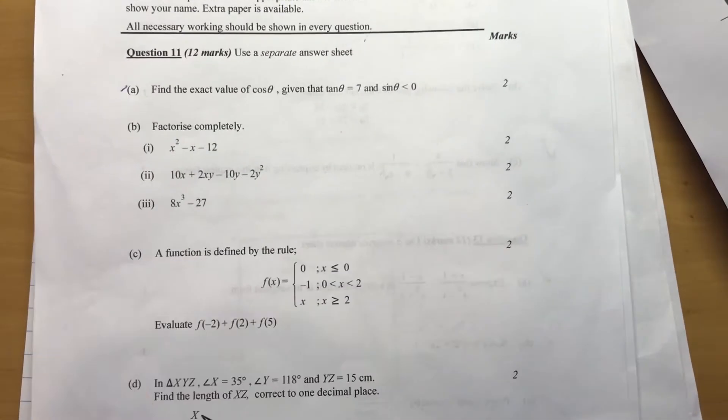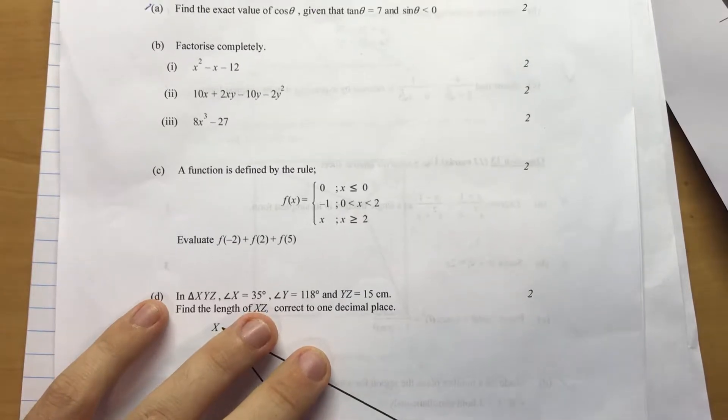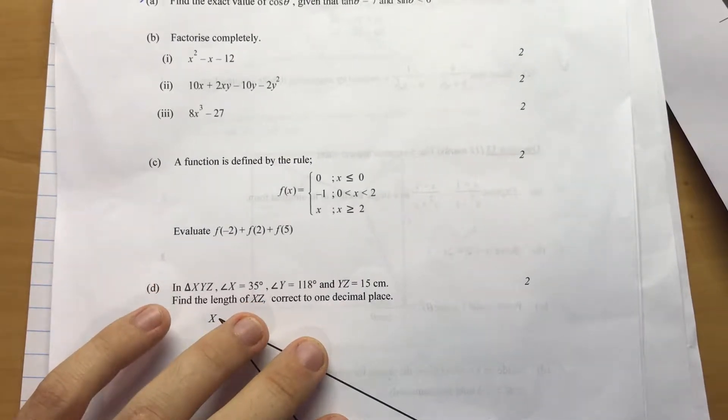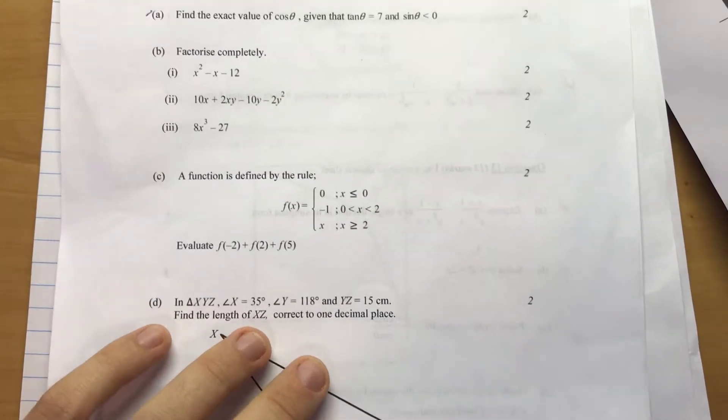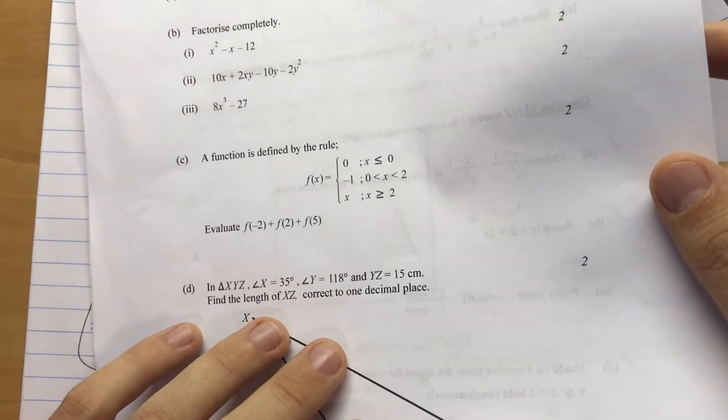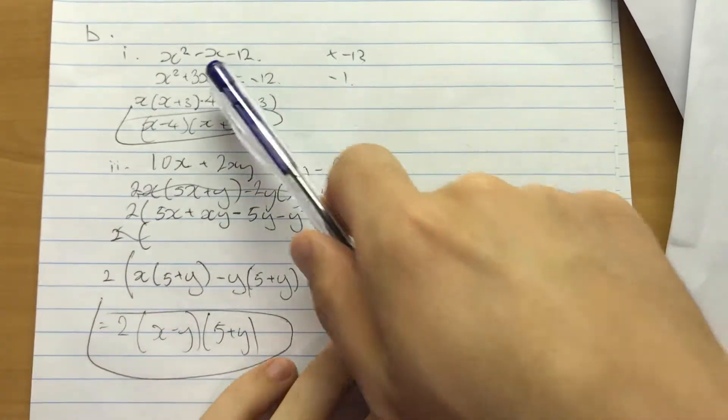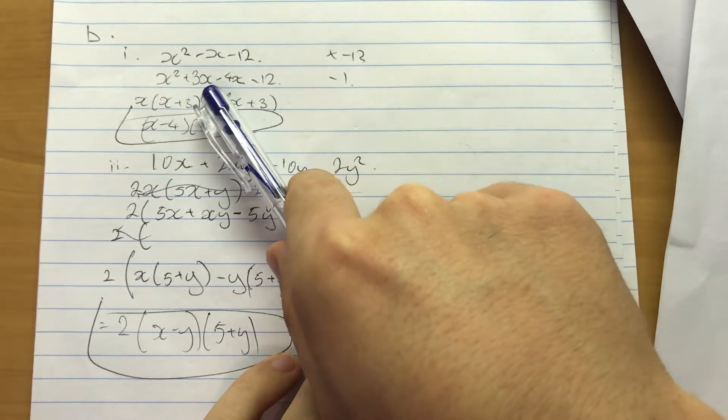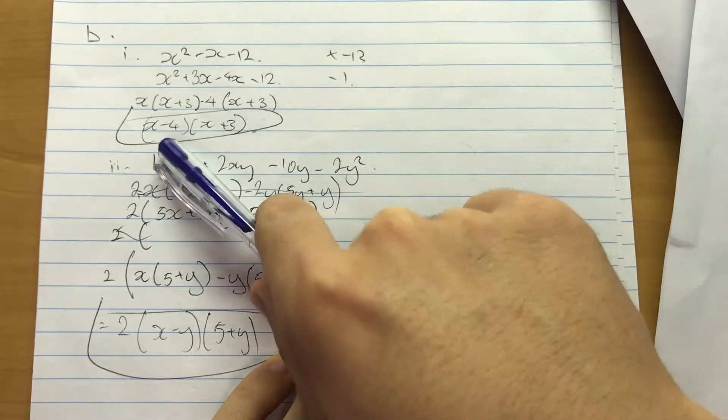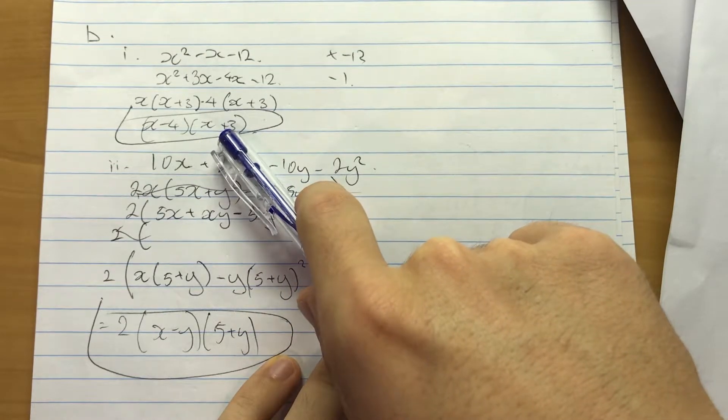So we're continuing with our checking of this exam. Now it's question 11 and we're looking at question part B: factorize completely x² - 3x - 12. Okay, and then look at this. So the working looks right and you have (x-4)(x+3). So even though it looks right, it's good to at least check.